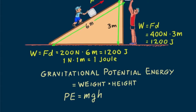The potential energy mgh is really an energy difference — it is measured relative to a reference level. For example, if the potential energy of the block atop the ramp is 1200 joules, then its potential energy is zero joules at the bottom of the ramp. We find that potential energy, or any form of energy, has significance only when it changes.